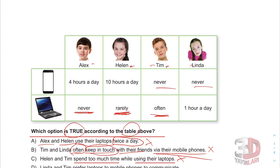D: Linda and Tim prefer — tercih ediyorlar — laptops to mobile phones to communicate. Haberleşmek için Linda ve Tim laptoplarını tercih ediyorlar telefondan ziyade. Let's see — Linda and Tim: they prefer their laptops. Tim uses it often, Linda uses it an hour a day. But they use their phones never. The answer is D.